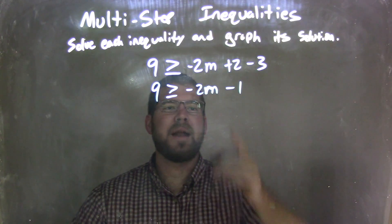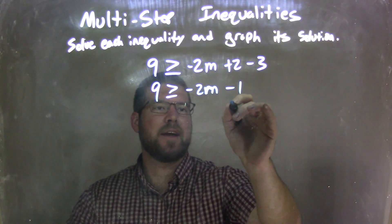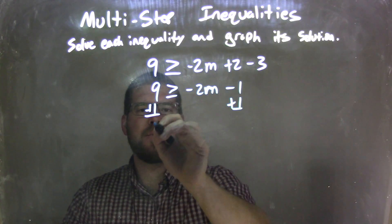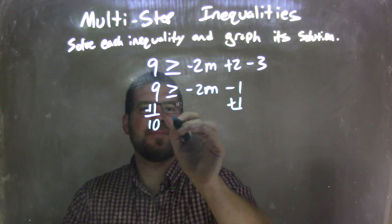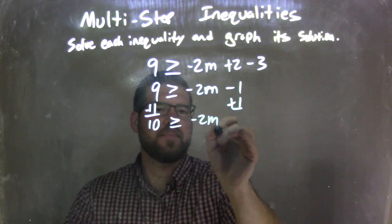Now I'm going to add 1 to both sides to try to get m by itself. Adding 1 to both sides leaves me with 9 plus 1 is 10, which is greater than or equal to negative 2m.